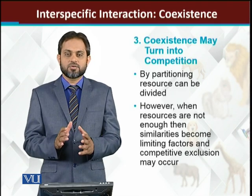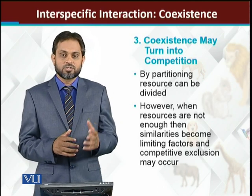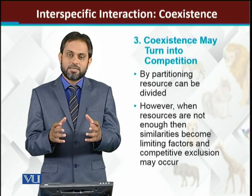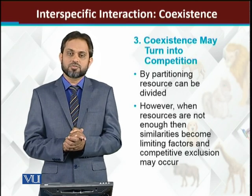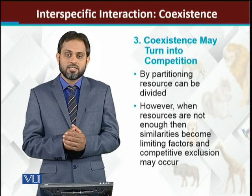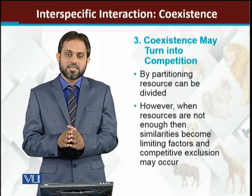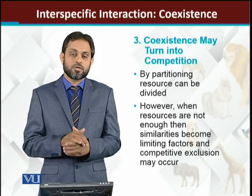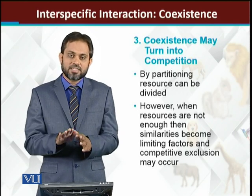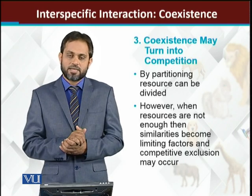Co-existence only continues when the resources are enough. If resources are limited and the supply of resources decreases, then competition will arise and the ultimate result will be competitive exclusion — co-existence will no longer remain. This is the second pattern of interspecific interaction called competitive exclusion, meaning when the five species compete, one will survive and the other four will have to migrate from that area.